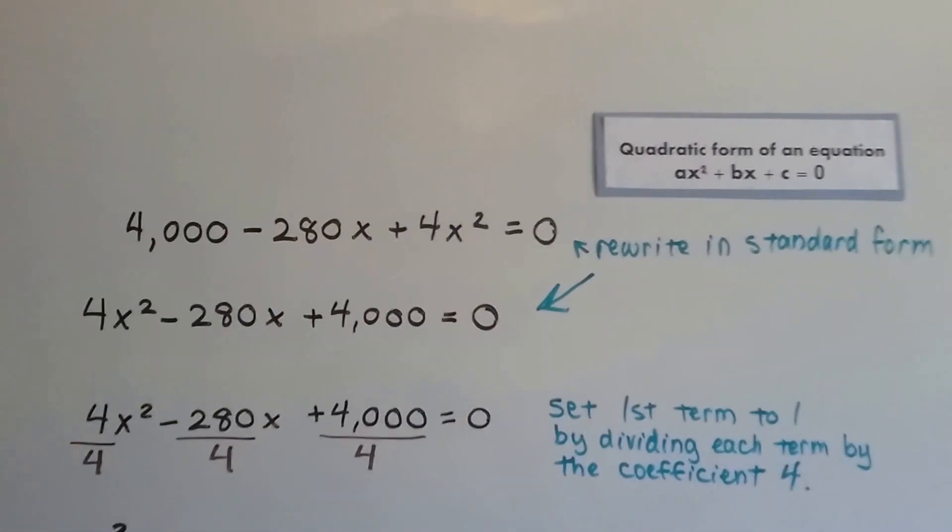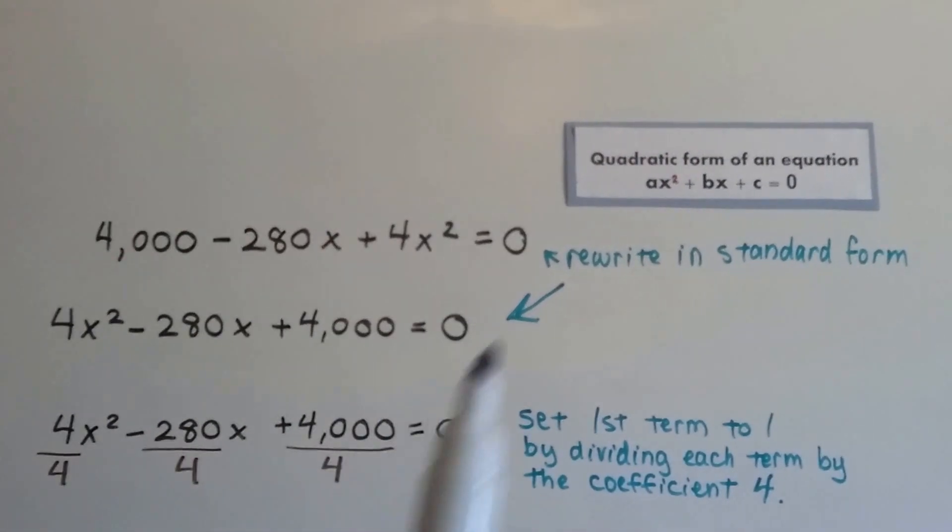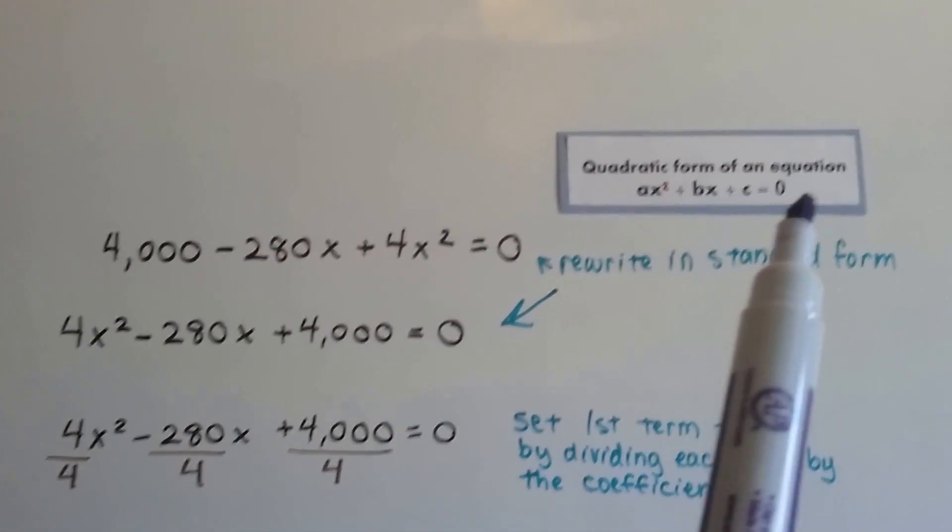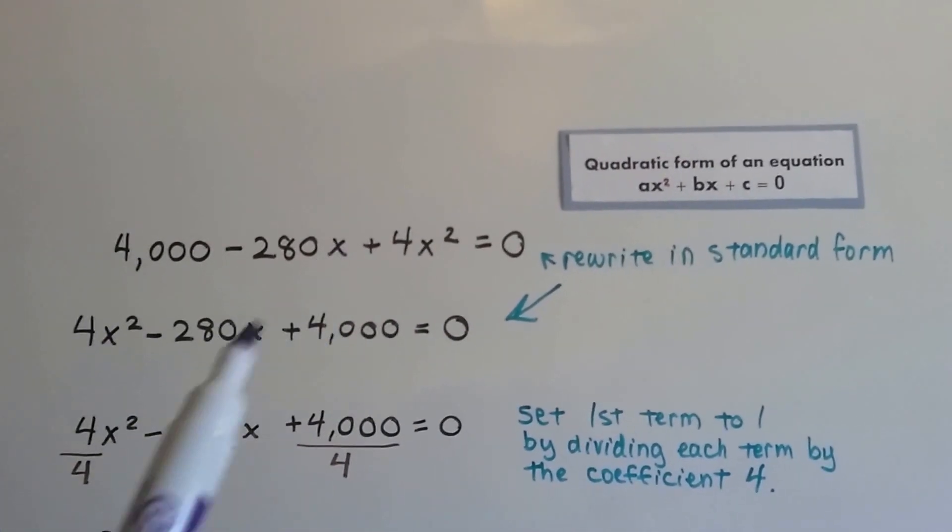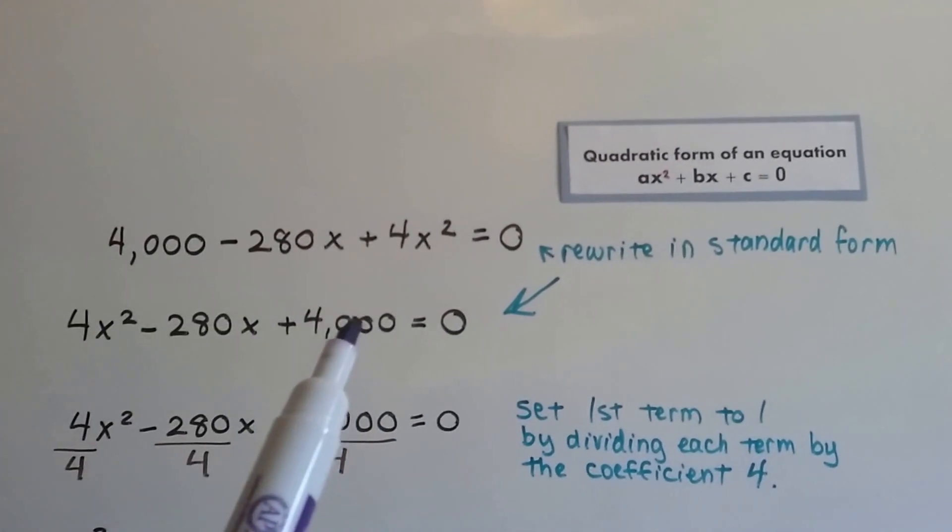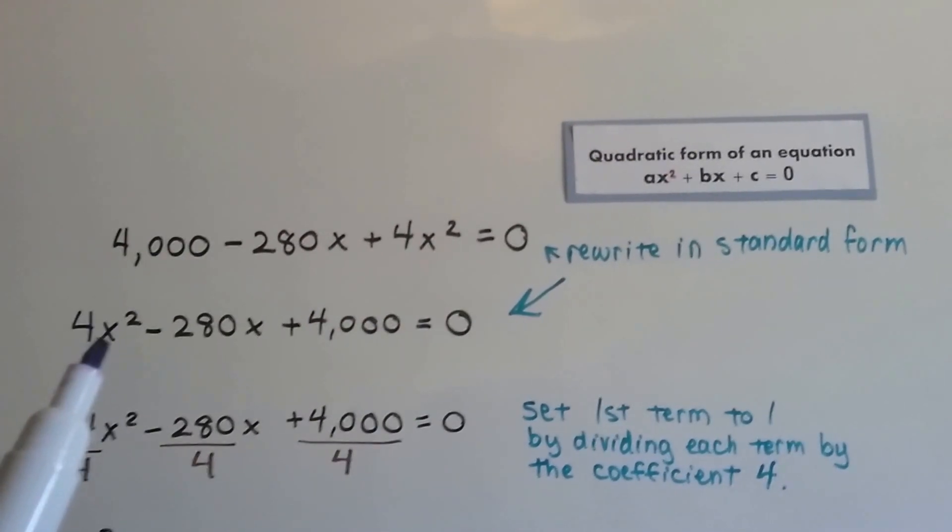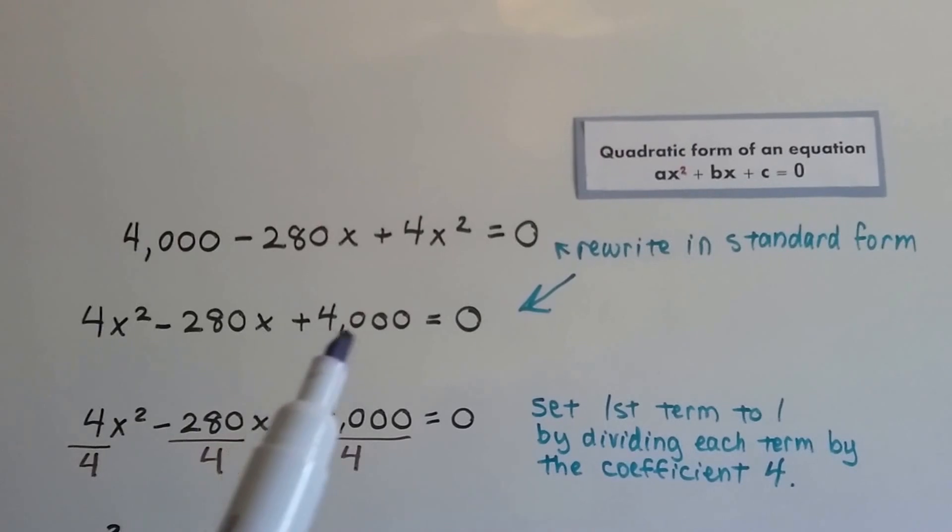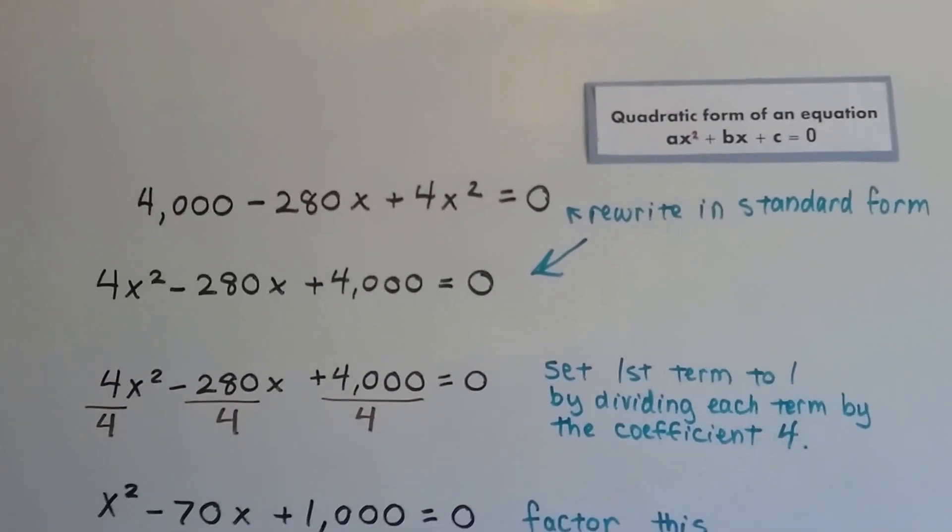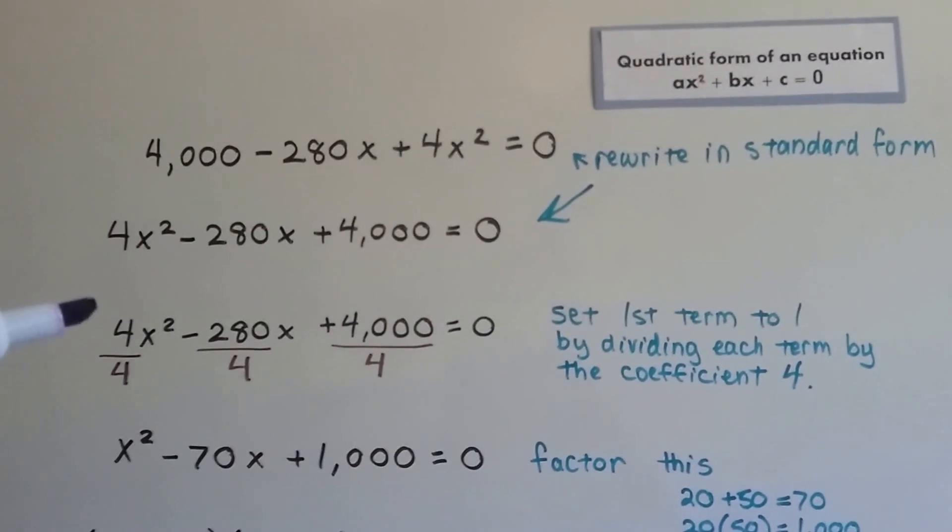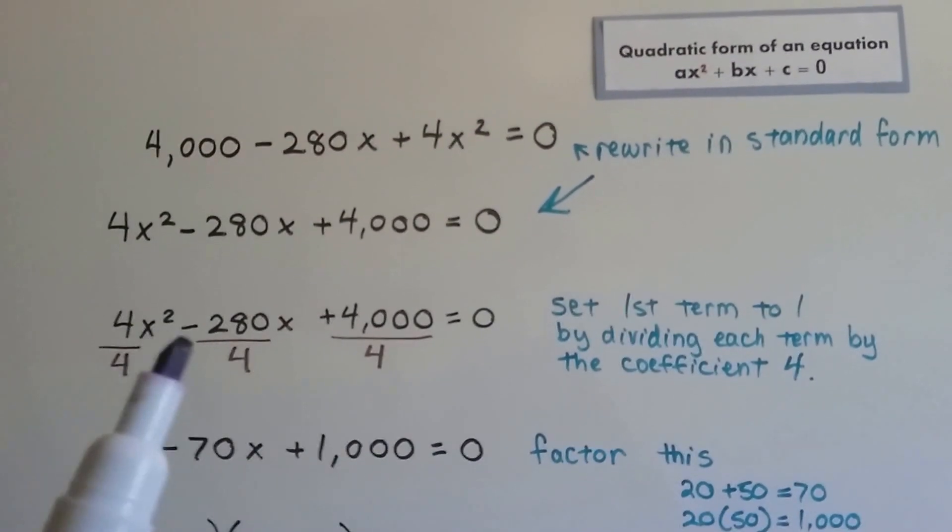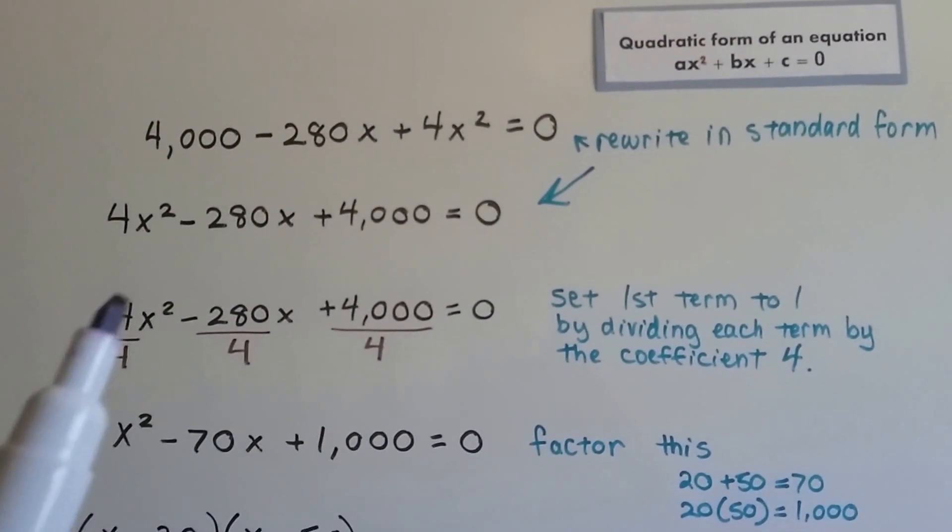We want it to be written in standard form, like ax squared plus bx plus c equals zero. So this needs to come in front, and then the x, and then the 4000. So now we've got 4x squared minus 280x plus 4000 equals zero. We need to set this first term to a one, so we're going to divide each of these by the coefficient 4.